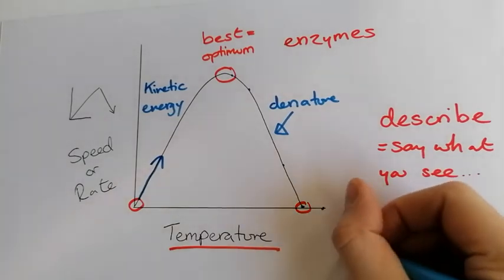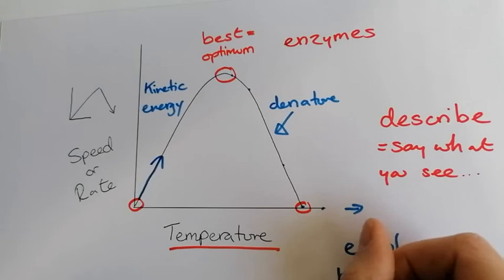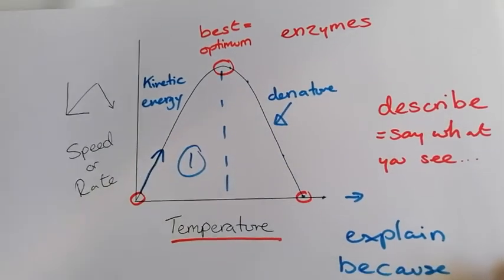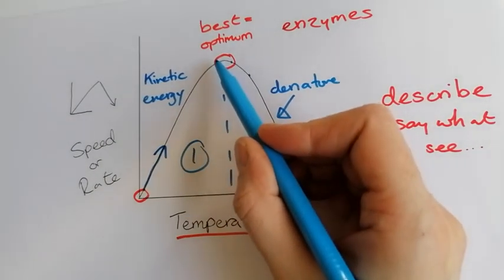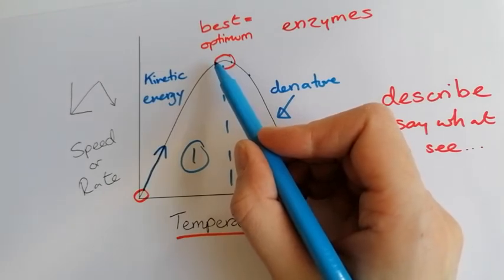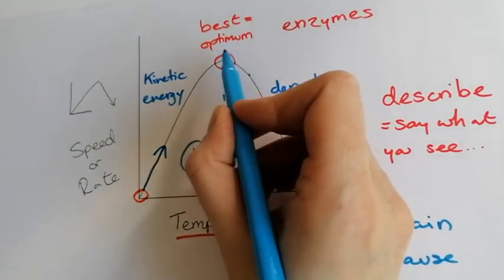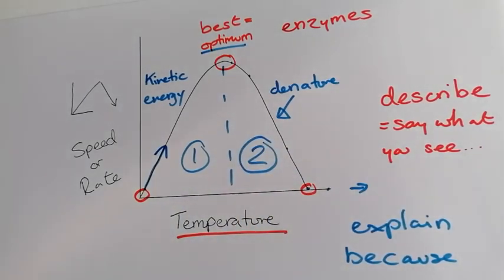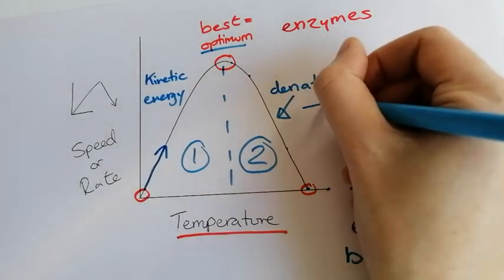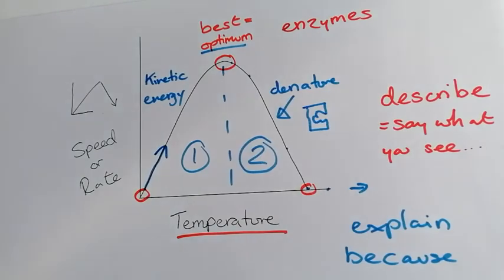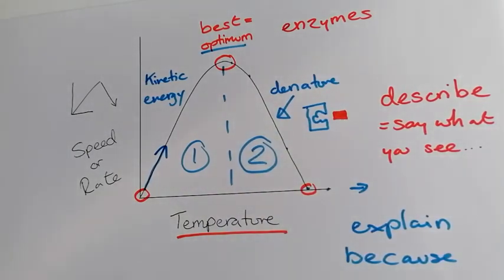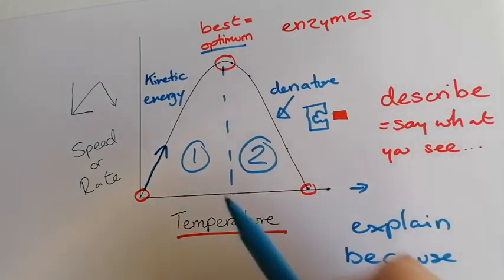When explaining, you need to be saying 'because,' and I'd suggest splitting the graph into two sections. In section one, the rate of reaction increases because there is more kinetic energy and therefore more enzymes are colliding with the substrate — more reaction is taking place. But past the optimum, in section two, there is so much heat that the enzymes begin to denature, meaning the active site changes so the substrate no longer fits inside, and if it no longer fits, no more reactions can take place.